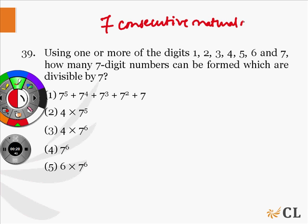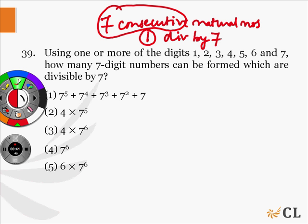there will be only one number in these 7 consecutive numbers that will be divisible by 7. And this property is true for any 7 consecutive natural numbers.